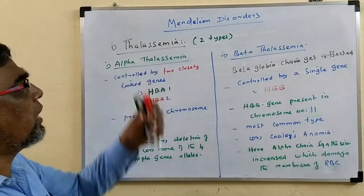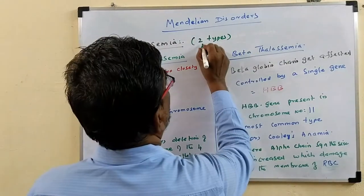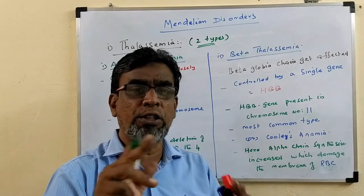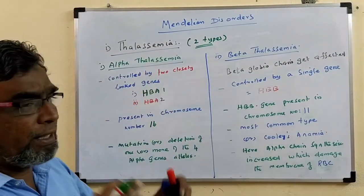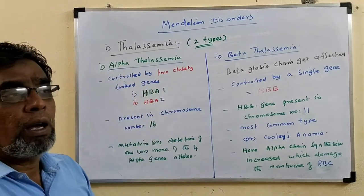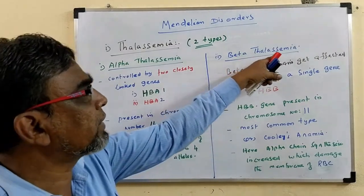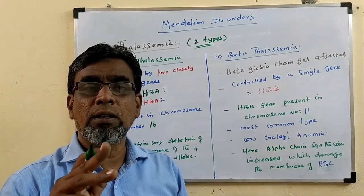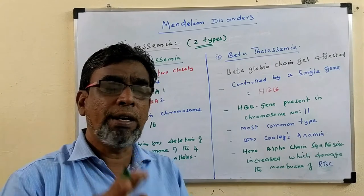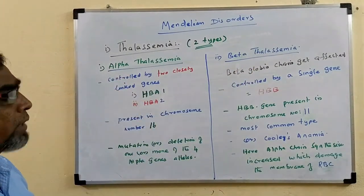Now Thalassemia is again classified into two types. We already know that each hemoglobin has four polypeptide chains — two alpha and two beta. If the alpha chain gets destructed or shows any abnormal condition, it is called Alpha Thalassemia. If the beta chain of the hemoglobin gets infected or altered, it is called Beta Thalassemia. Thalassemia is two types based on the infection of the alpha or beta chains.